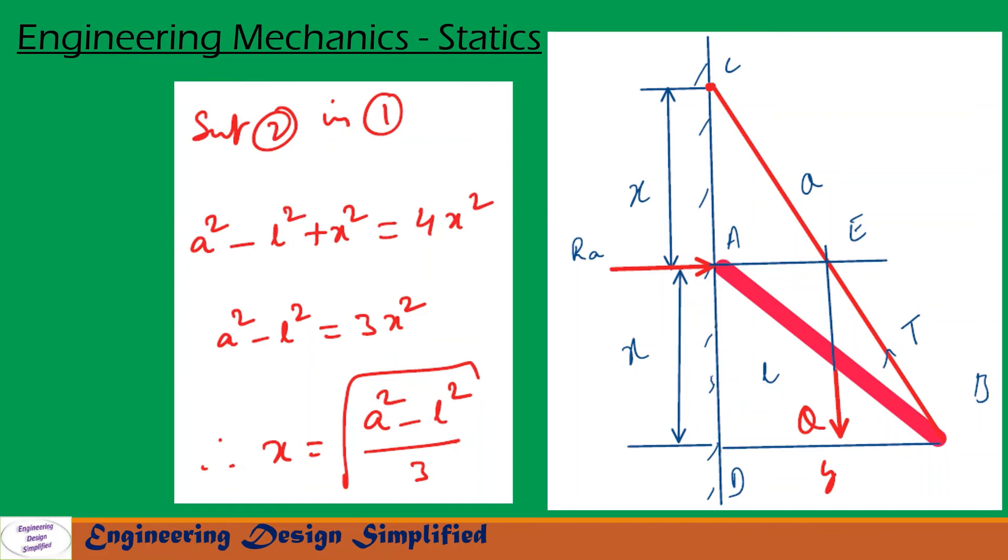Now let us substitute equation 2 in equation 1. We get A square minus L square plus X square equal to 4X square. After simplification, A square minus L square equal to 3X square. From this, X can be written as X equal to square root of A square minus L square by 3.